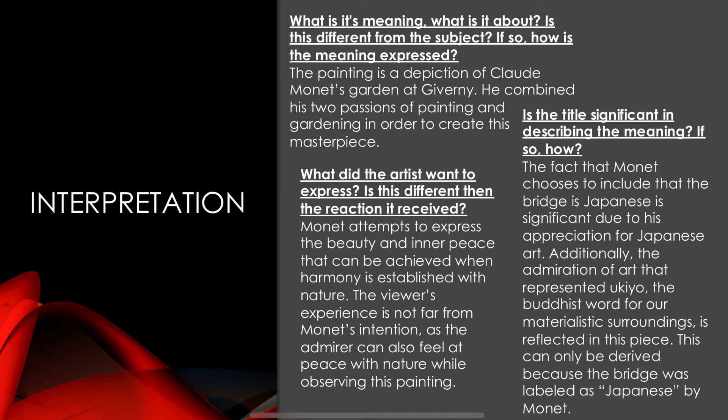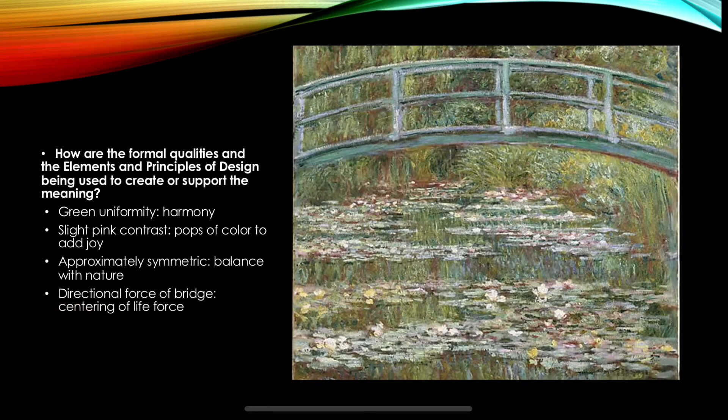The fact that Monet chose to include that the bridge is Japanese in the title is significant due to his appreciation for Japanese art. Additionally, the admiration of art that represented yukio — the Buddhist word for our material surroundings — is reflected in this piece. It was through the Japanese bridge title that we were able to conclude that this painting is about the harmony between nature and humanity.